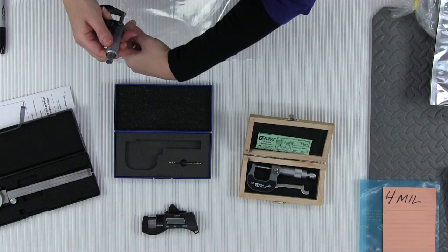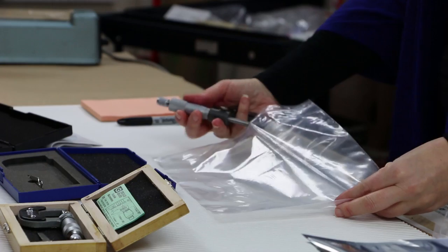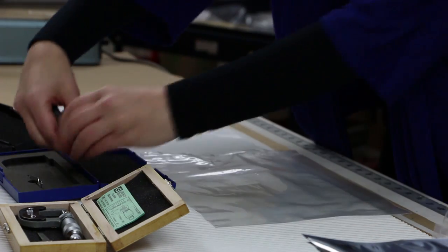On this style, it is a crank style micrometer that also presses the poly between two tips, providing you with your reading. In this case, it was a two, which is equivalent to two mil.